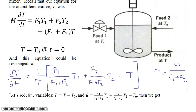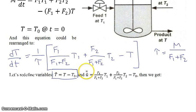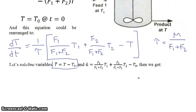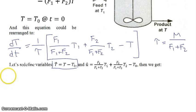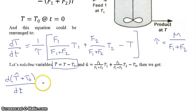If we take that equation and redefine our variables in terms of deviation variables, we let T-hat equal T minus T0, and define u-hat as that weighted sum minus T0. Then the time derivative of T-hat plus T0 is equal to 1 over tau times T0.